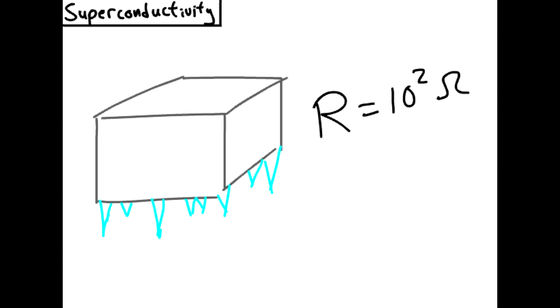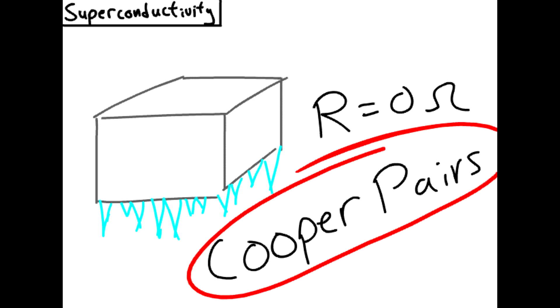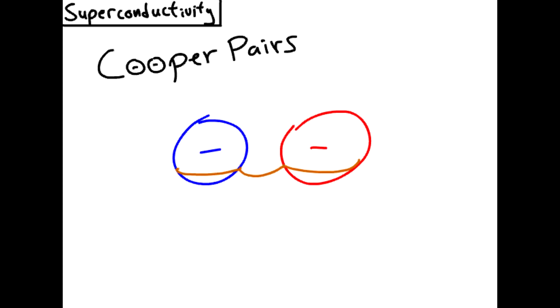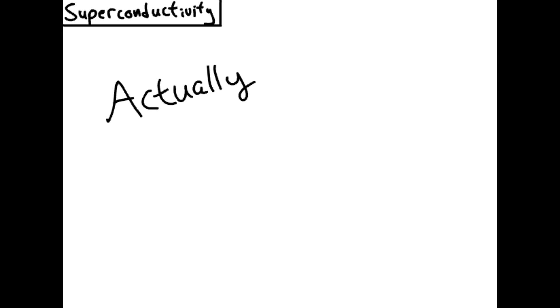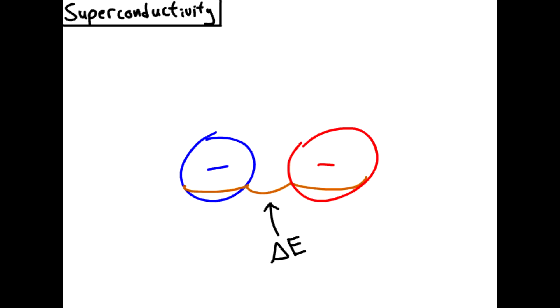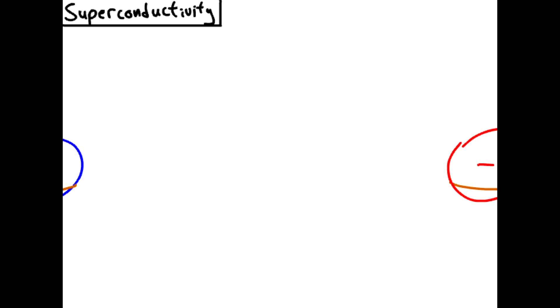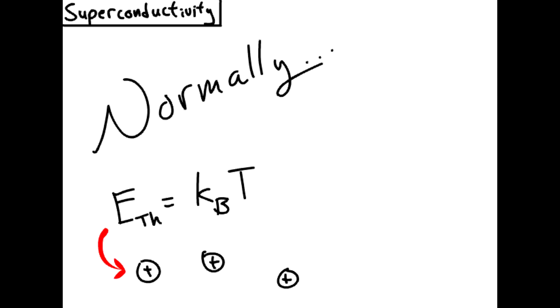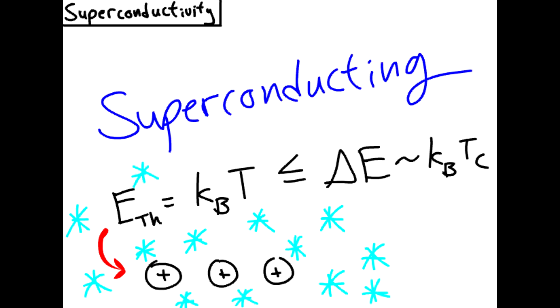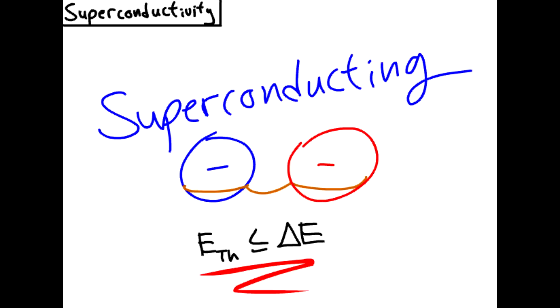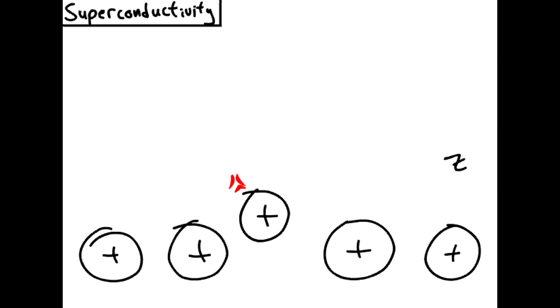The reason these metals are able to offer no resistance is due to the formation of things called Cooper pairs. They arise when two electrons are weakly bound together thanks to a phonon exchange. Cooper pairs actually have an energy gap that needs to be overcome in order to break this bond. Normally, the thermal energy in the lattice is enough to break it, but when the temperature is so ridiculously low, the Cooper pairs can't be broken and can move along their merry way without ever getting scattered.